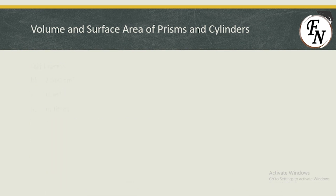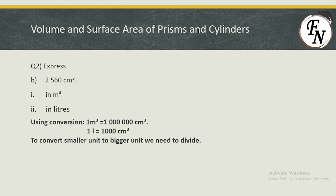Moving on to question 2 part B. Now we are converting 2,560 centimeter cube to meter cube and then into liters. Recalling our conversions: 1 meter cube equals 1,000,000 centimeter cube, and 1 liter equals 1,000 centimeter cube. Centimeter cube is the smaller unit and meter cube and liters are bigger, so we are going from smaller unit to bigger unit and we need to divide.